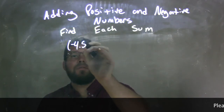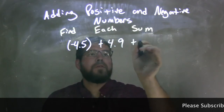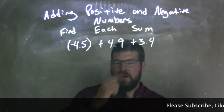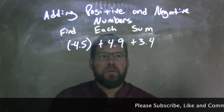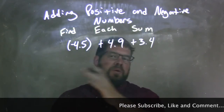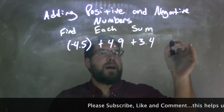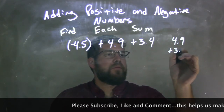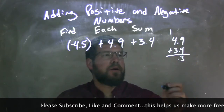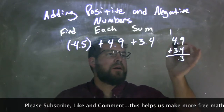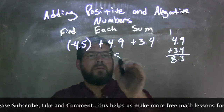Negative 4.5 plus 4.9 plus 3.4. I'm going to bring together the 4.9 and 3.4 first, since it's all addition. 4.9 plus 3.4: 9 plus 4 is 13, carry the 1, put 3 down. 1 plus 4 is 5, plus 3 is 8. So 8.3 is my answer here.